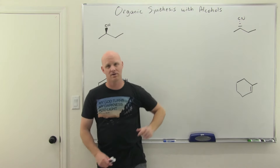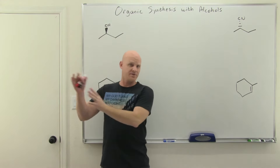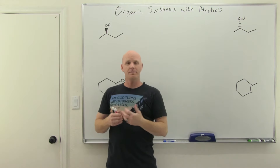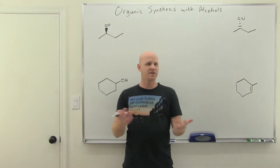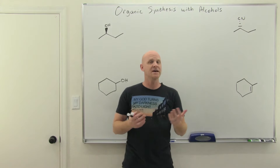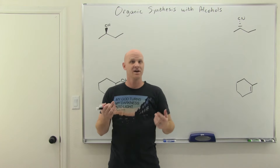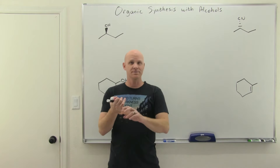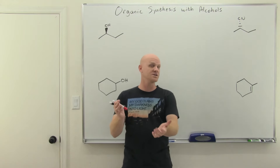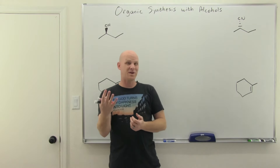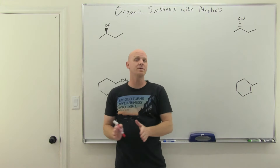Organic synthesis with alcohols. We covered a whole chapter on common patterns in organic synthesis, and it really focused on just three sets of reactions: substitution, elimination, alkenes, alkynes, and free radical halogenations. So four different sets of reactions — because that's all you'd learned up until then.